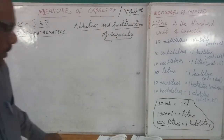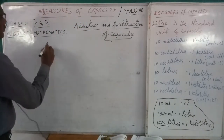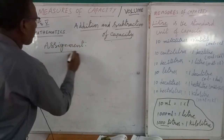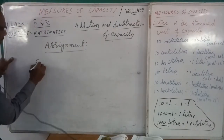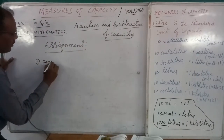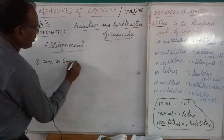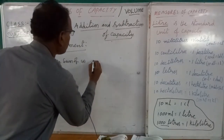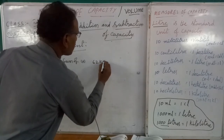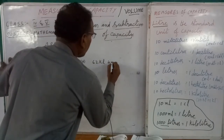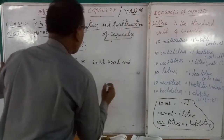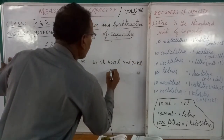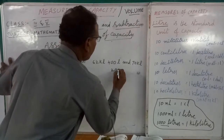Okay my dear children, assignment for you. Point number one: find the sum of — A) 70 kiloliters 200 liters.